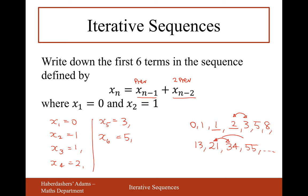This is a sequence where you add together the 2 previous terms to get the next term. Hopefully you know the posh name for this - it's the Fibonacci sequence. A very famous sequence with all sorts of mathematical properties. When you get to A-level you'll see more of those properties. Thanks very much for watching - we're moving on to solving iterative equations in the next video.